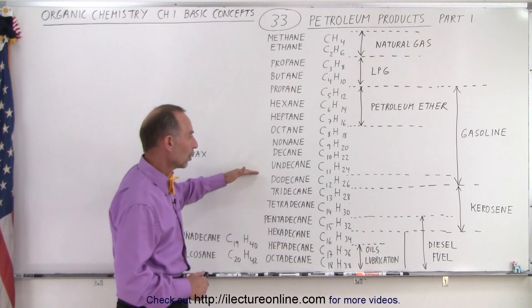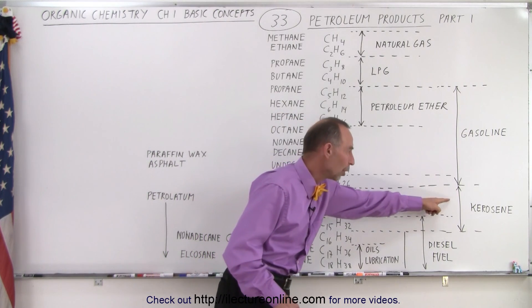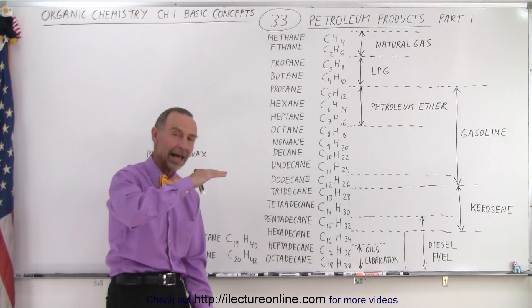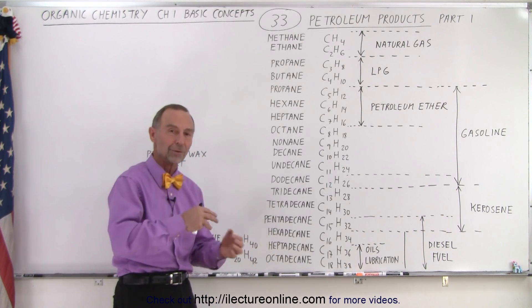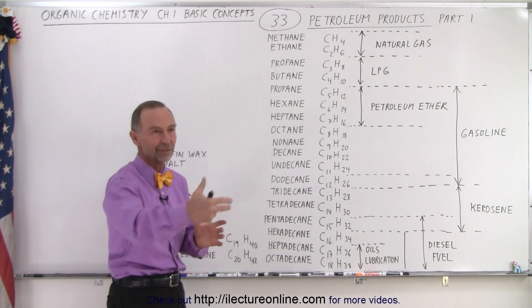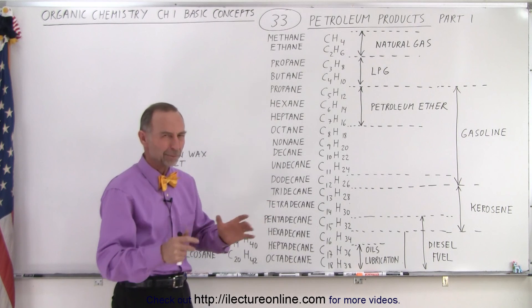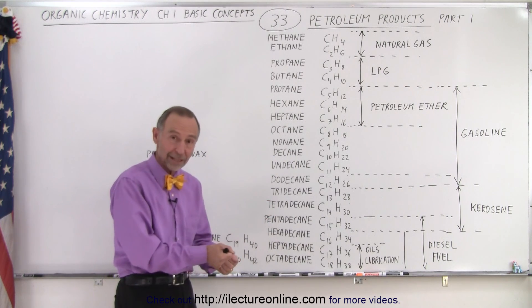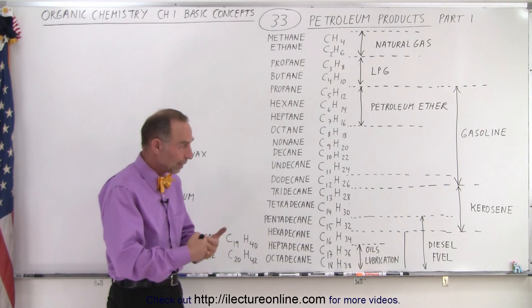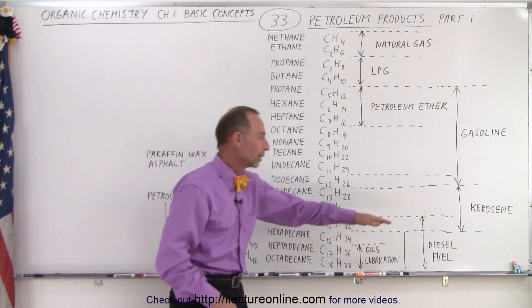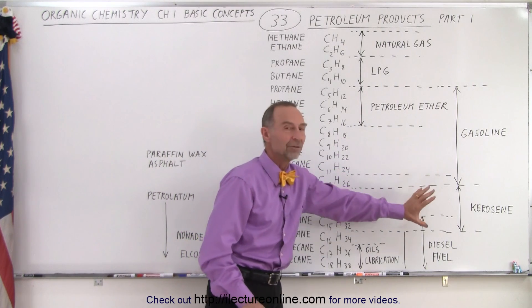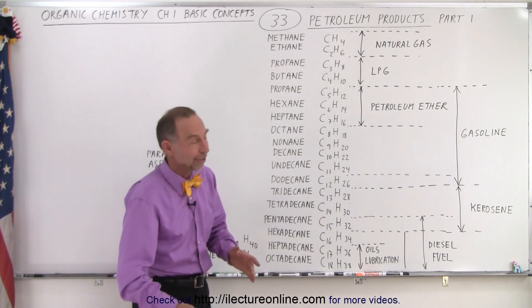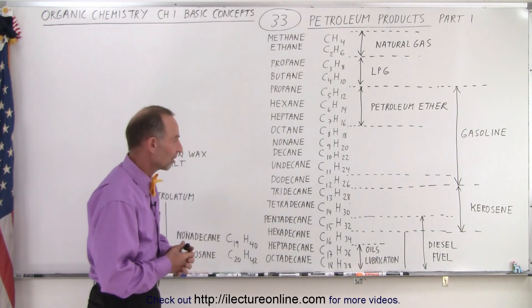Going below gasoline, we end up with what we call kerosene. My grandparents had a kerosene lamp in the bathroom — it was pretty cold in winter, so they would light it to provide heat. Kerosene is below gasoline on the scale, so it's not as flammable and not as dangerous to use in the home as gasoline would be.